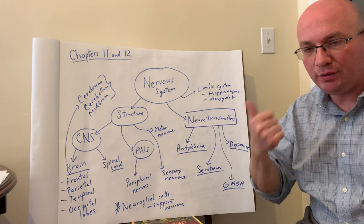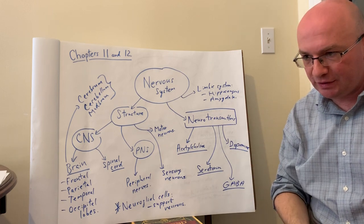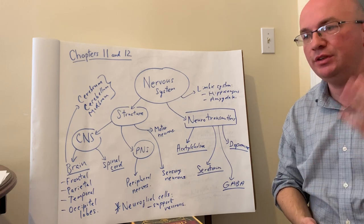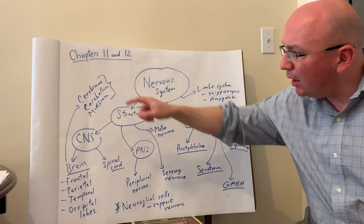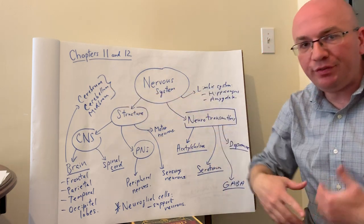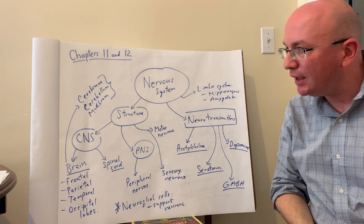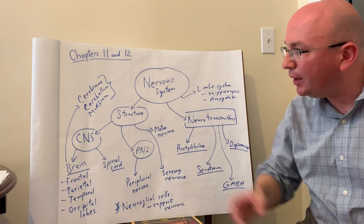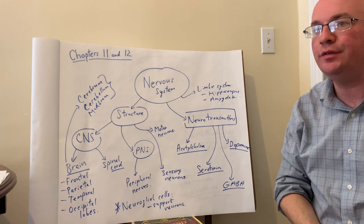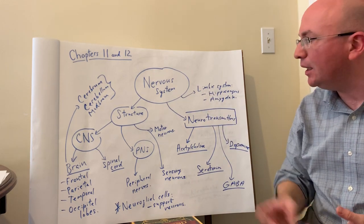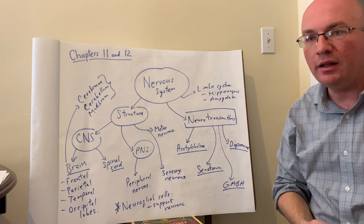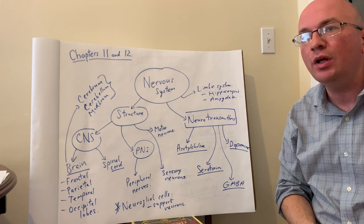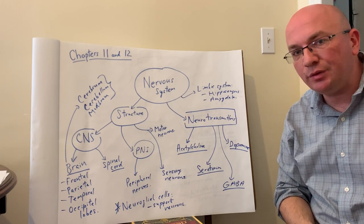Again to recap: frontal lobes deal with executive functions, parietal lobes with sensory information, temporal lobes with hearing and balance, and occipital lobes primarily with vision. For the cerebellum, that deals with coordination of movement and balance — it's a smaller portion in the back lower than the occipital lobe. The midbrain has various centers including the thalamus, hypothalamus, parts of the limbic system, and the brainstem, controlling cardiovascular function, respiratory function, and the endocrine system with its hormones.